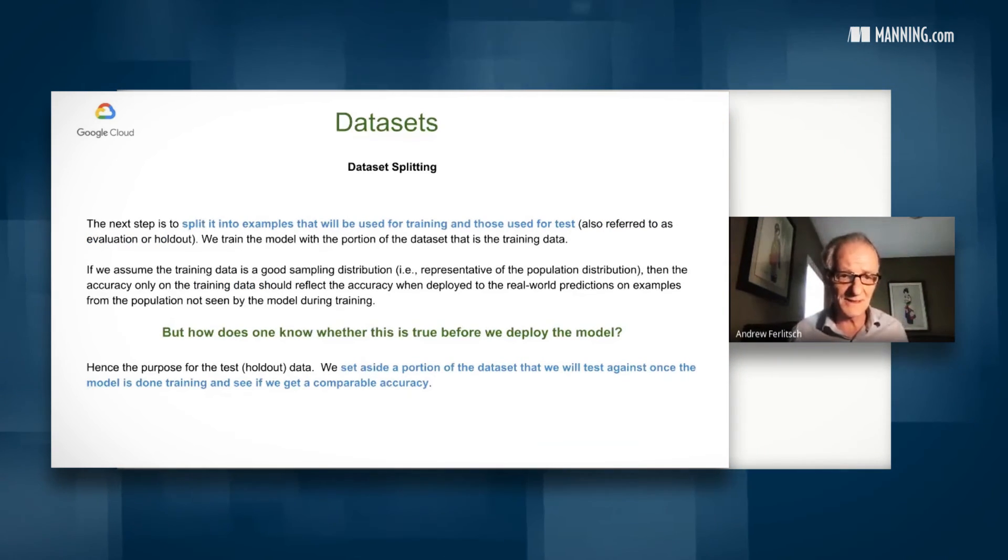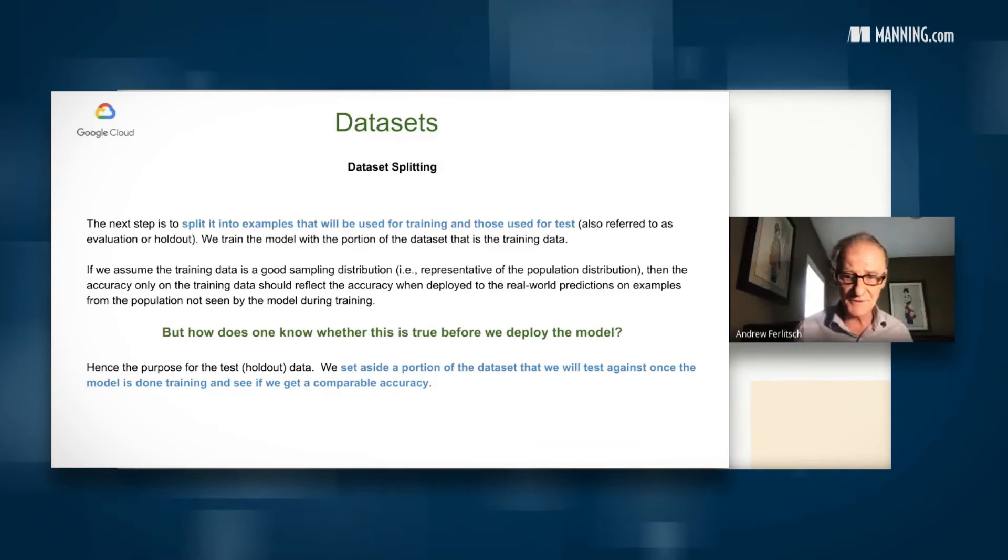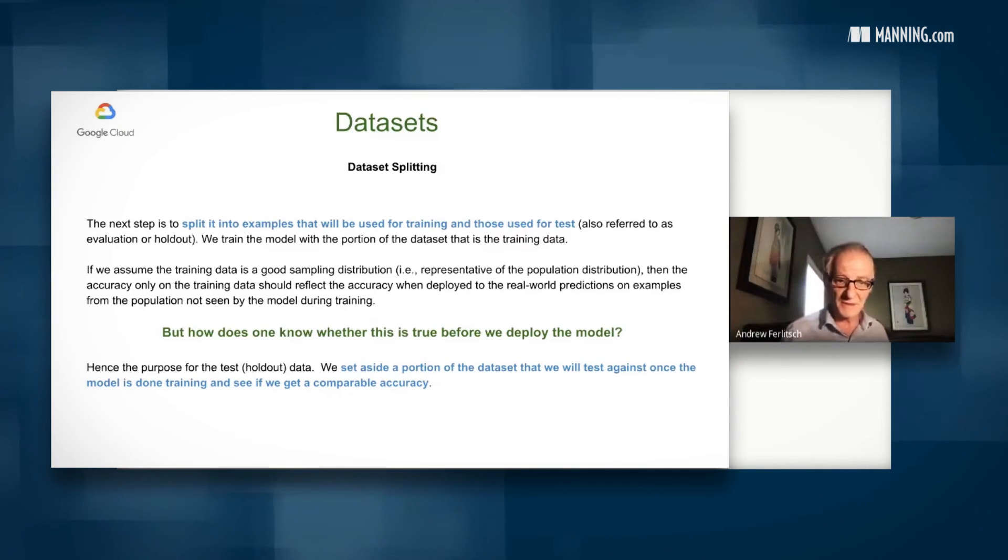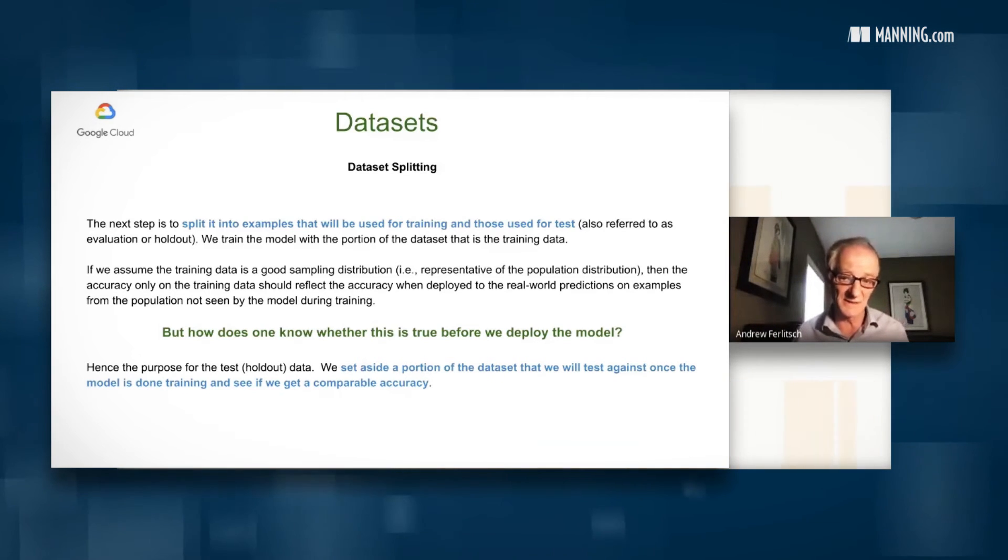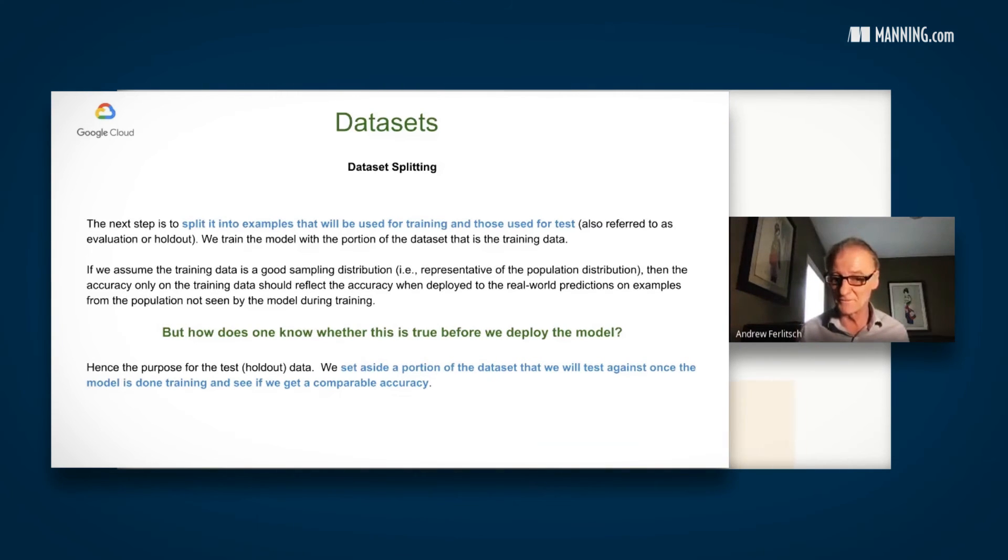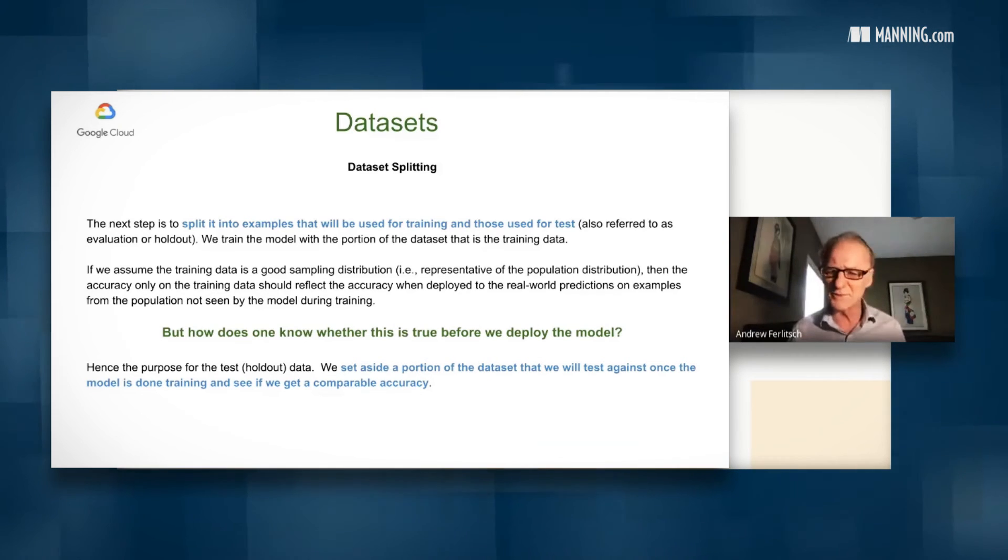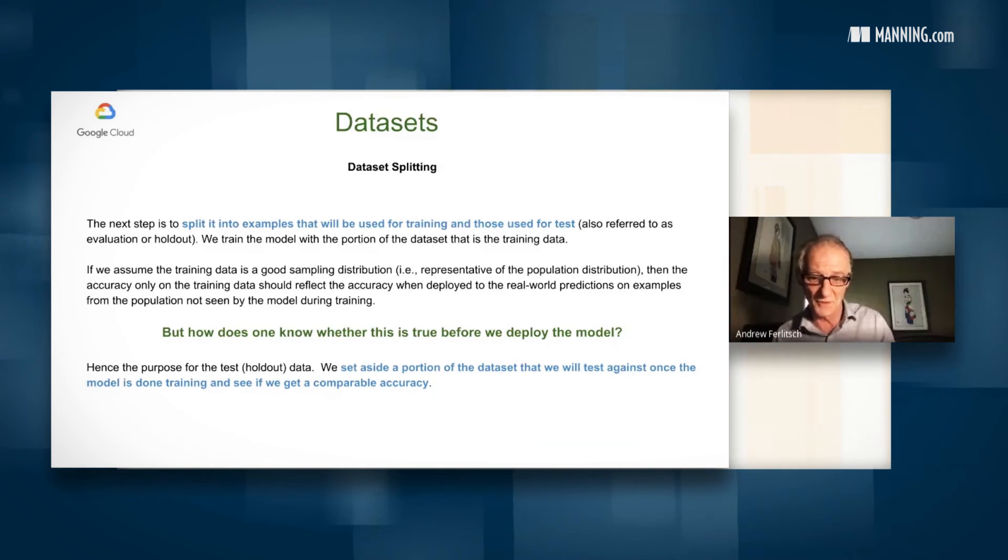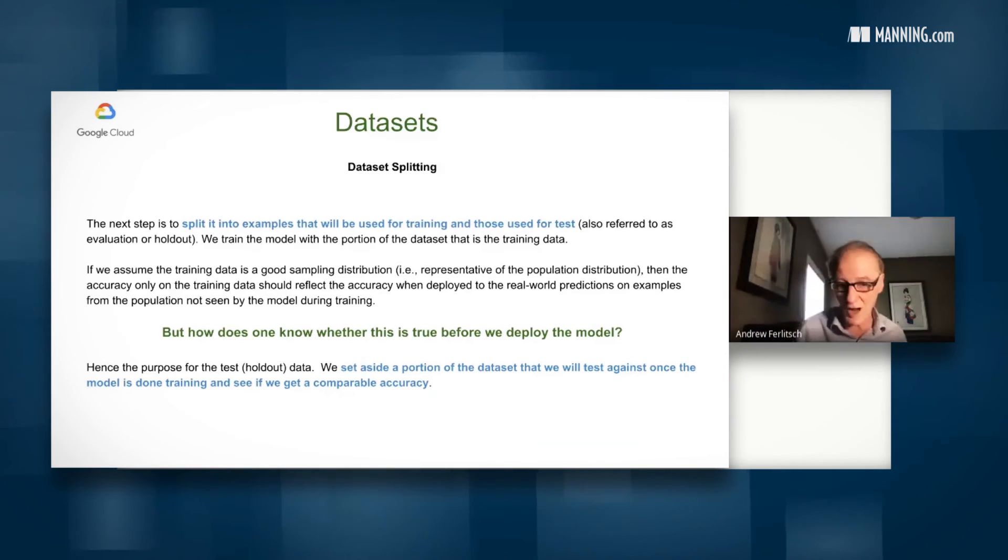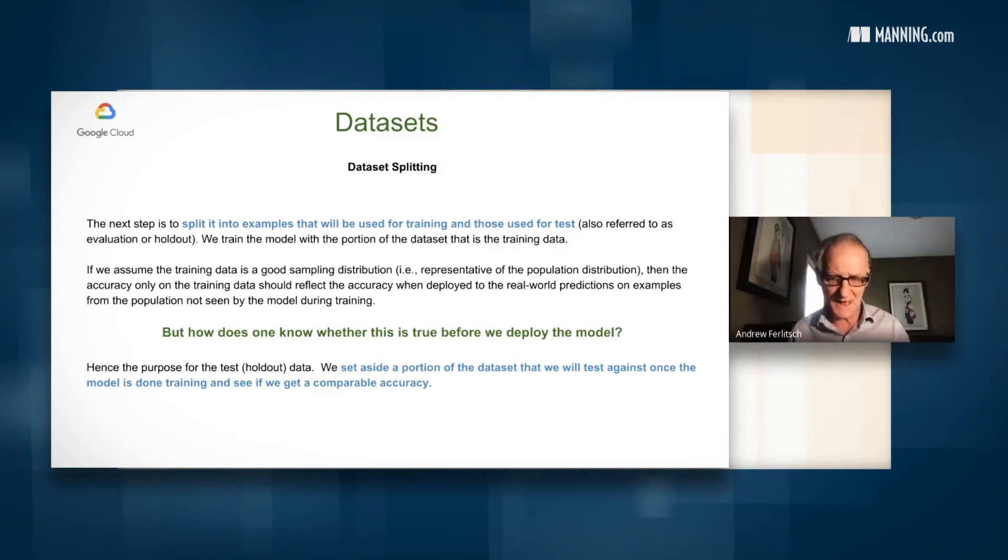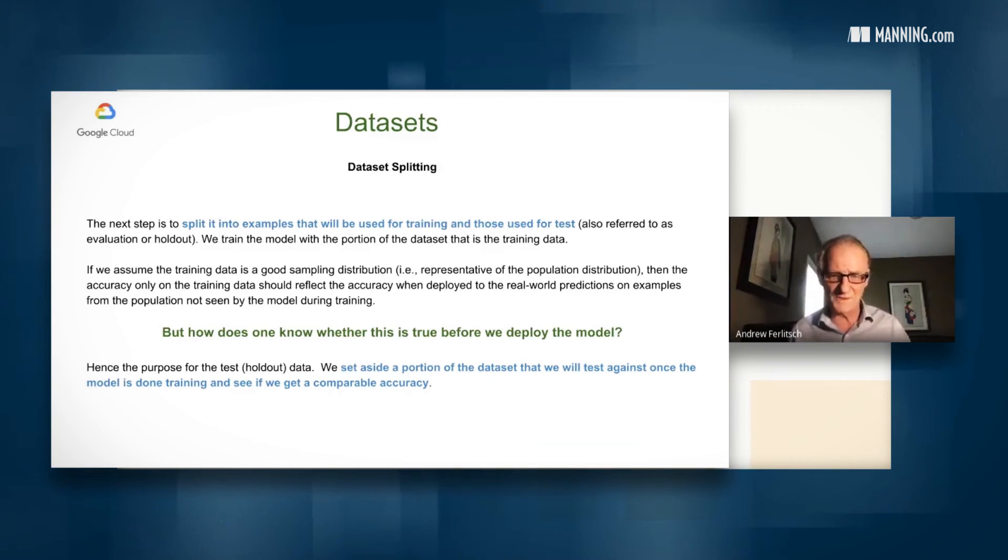So the first thing we need to do when we've got a data set is we need to split it. Some of it's going to be used for training, and some of it's going to be used for testing. And we're going to make assumption that our training data is a good sampling distribution. That is, it's representative of the population distribution. Therefore, the accuracy on the training data should reflect the accuracy when deployed to the real world. But how do we really know this is true before we deploy the model? And that's the purpose of the test data. We're going to hold it out, also referred to as holdout data, and we're never going to train the model on the test data. When we're done training the model, we're going to use the test data to predict how the model would do once it's deployed.